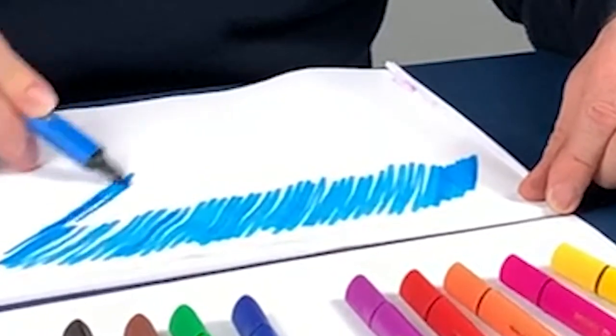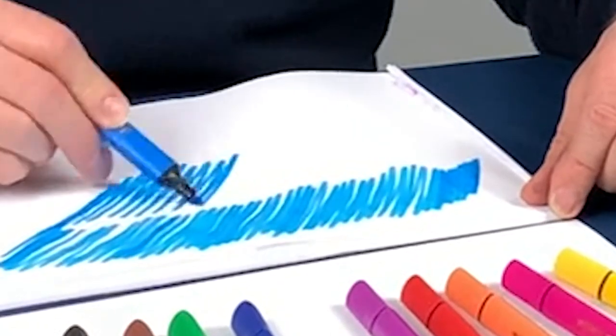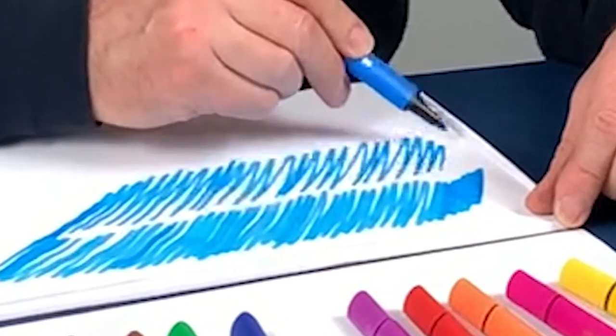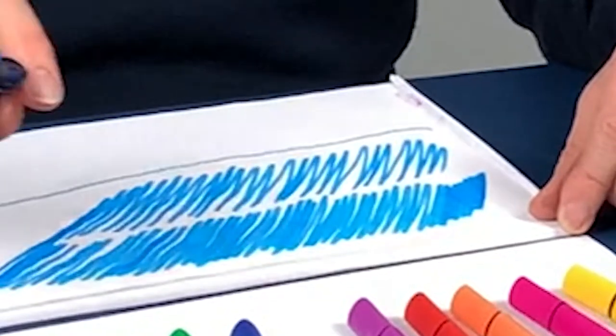You're seeing here that I'm just covering the page. Now with most coloring pens you'll see they'll start to peter out quite quickly. This ink flow is beautifully smooth and consistent.